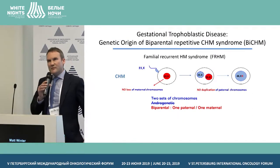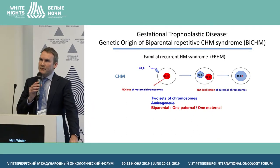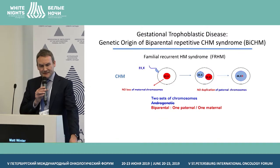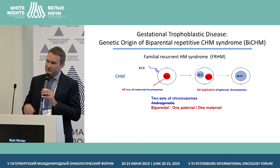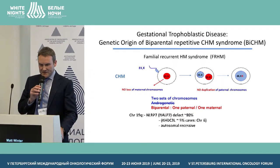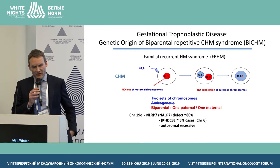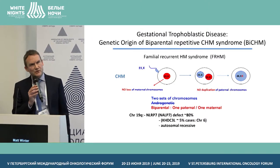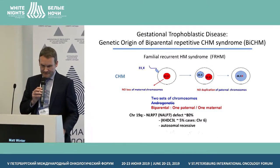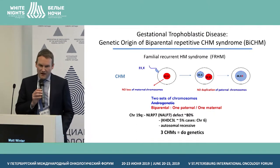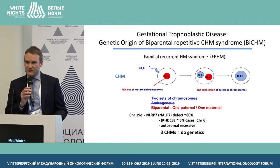In familial recurrent hydatiform mole syndrome, the complete moles are still diploid but are not generated entirely from paternal contribution — they are in fact bi-parental, with one paternal and one maternal set of chromosomes. This is thought to be due to autosomal recessive mutations on two chromosomes: the more common is NLRP7 on chromosome 19, accounting for about 80% of cases, and KHDC3L accounts for about 5% of cases on chromosome 6. It's important to consider this in patients with three or more complete moles, as it directly affects her choices regarding future pregnancy.